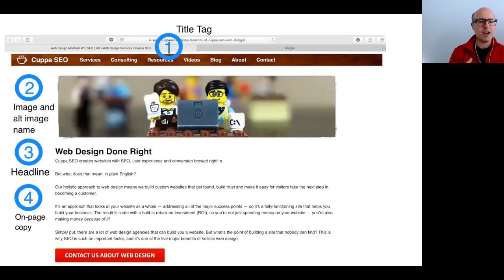So next up is your headlines. That's number three. And this is actually your H1 headline. So those of you who are on the editor side of WordPress, that's the code. It's H1, which really means it's the biggest, most important headline on the page.